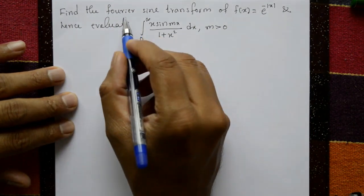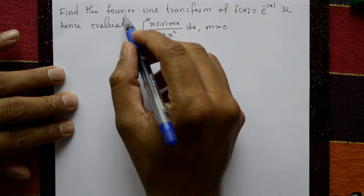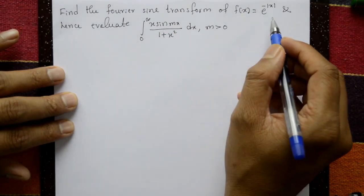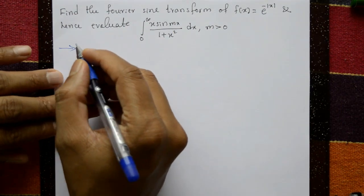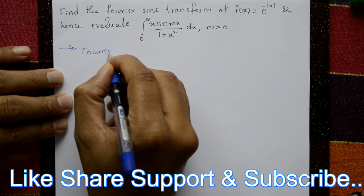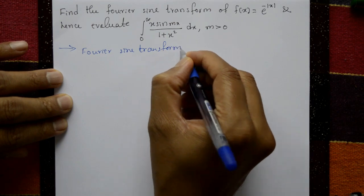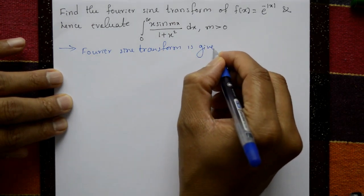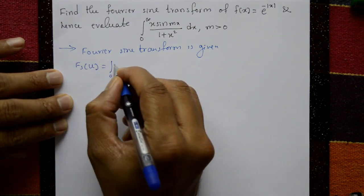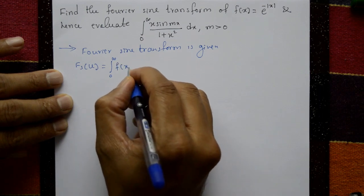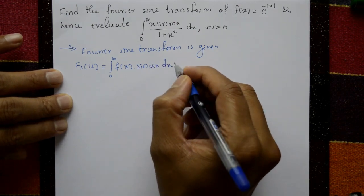The solution has two steps: first we find the Fourier sine transform, then we use the inverse sine transform. The Fourier sine transform is given by fs(u) = integration from 0 to infinity of f(x)·sin(ux) dx.